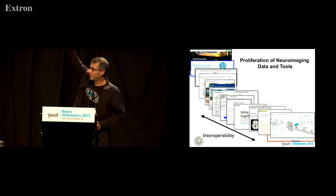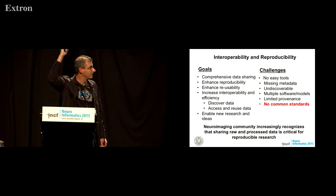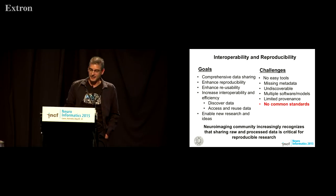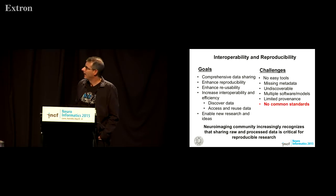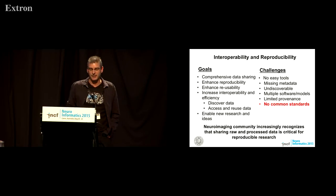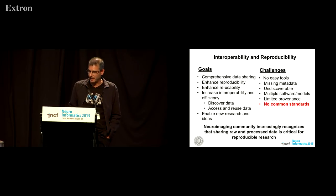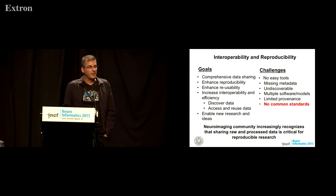We lack formats for workflow provenance — what you did to the data and so forth. Some of the goals for us are comprehensive data sharing, enhancing reproducibility and reusability of existing data, and being able to discover and access data to enable new research. Our problem right now is that we have no common standard for the metadata. Data sets sometimes come organized in different directory structures, which makes them hard to use. How do you know what experiment a subject came from, who the PI was, what was run in what order, what the parameters were? Sometimes this comes in text files and log files, but we think we can do something better than that.